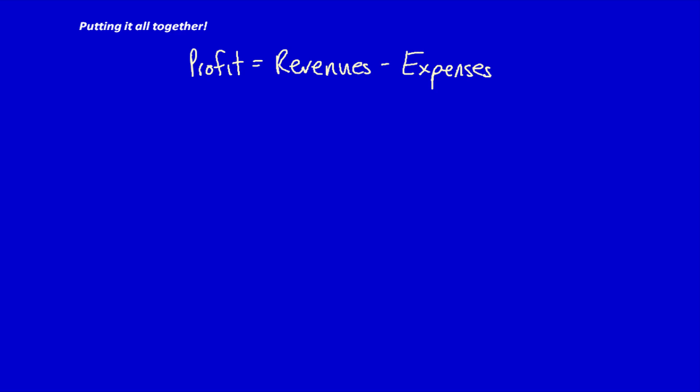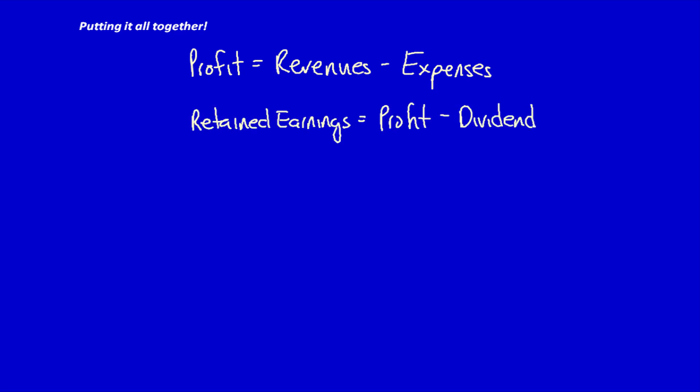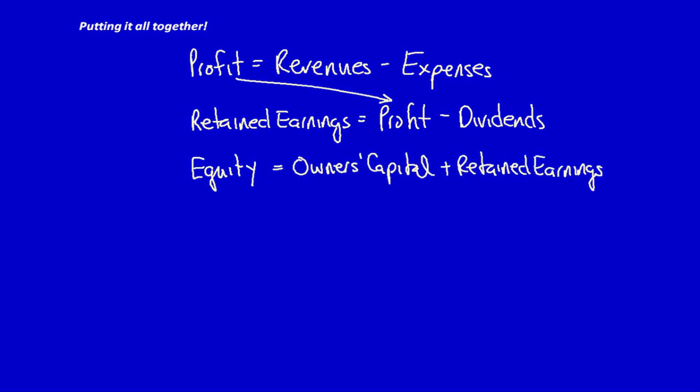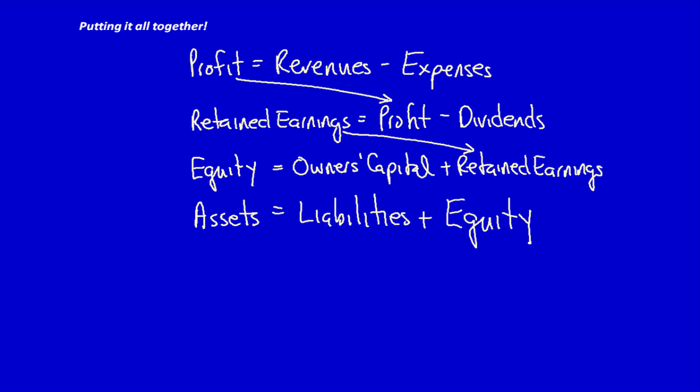Let's put all the equations and their interconnections together, starting with our understanding of profit and ending with the basic accounting equation. Profit is equal to revenue minus expenses. Retained earnings is equal to profit minus dividends. Equity is equal to owners capital plus retained earnings. Assets is equal to liabilities plus equity.